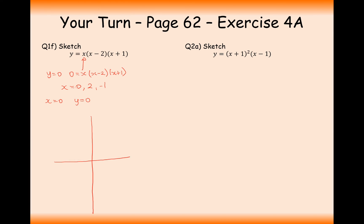To sketch this graph, we've got intersection points at (0, 0), (2, 0), and (minus 1, 0). Note that (0, 0) corresponds to both a root and the y-axis intersection. Expanding gives a positive x-cubed term, so starting bottom left, finishing top right, making sure we intersect all those points — the graph looks like this, passing through x equals 2, x equals 0, and x equals minus 1.